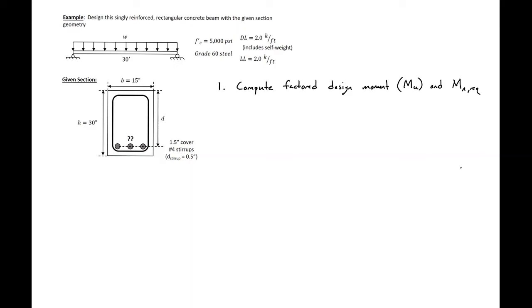In this video we're going to design a singly reinforced rectangular concrete beam with a given section geometry. We're given our height and width of our section and we're only designing for our steel. It's not necessarily three bars, we're going to design for the actual steel that we'll include.